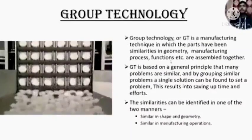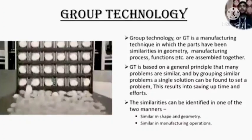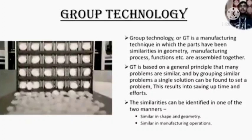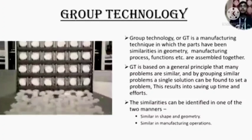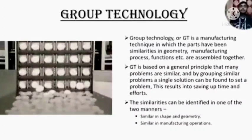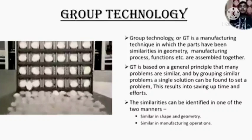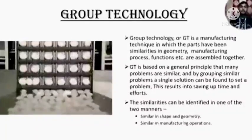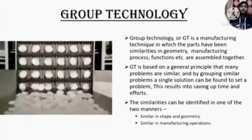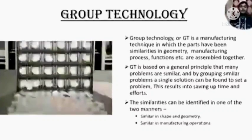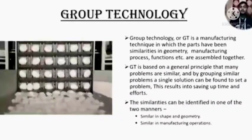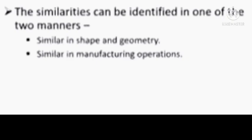Now we come to the topic of group technology, GT. Group technology is a manufacturing technique in which parts which have similarities in geometry, manufacturing process, functions, and operations are assembled together. GT is based on a general principle that many problems are similar, and by grouping similar problems, a single solution can be found. This results in saving time and effort. The similarities can be identified in one of two manners: similar in shape and geometry, or similar in manufacturing operations.